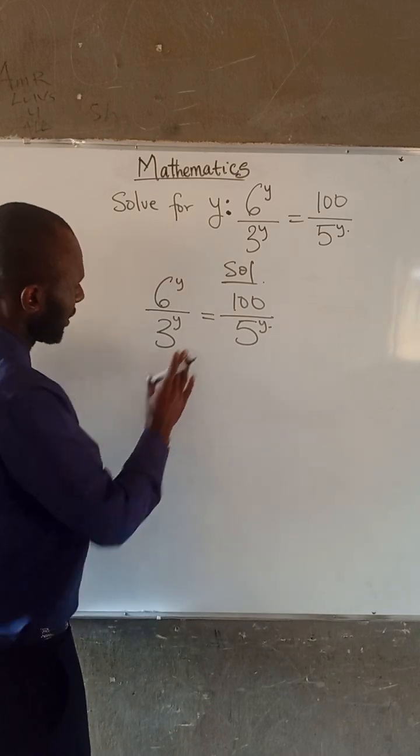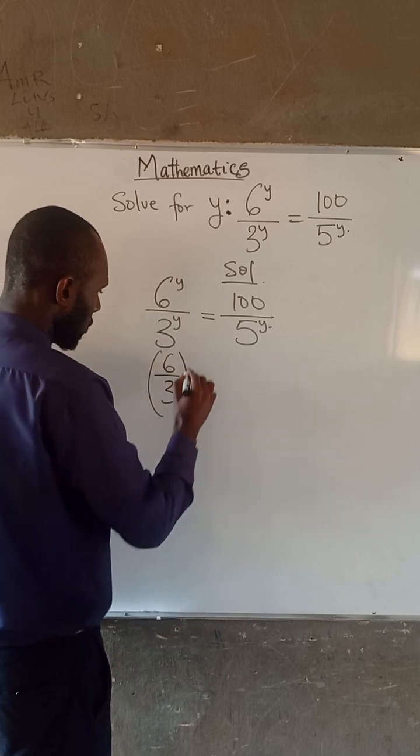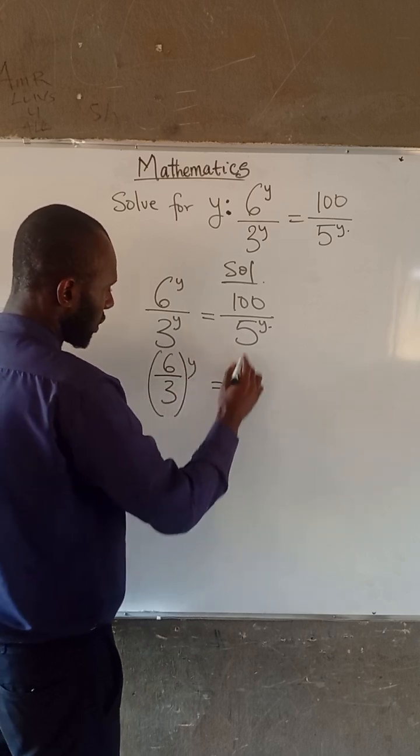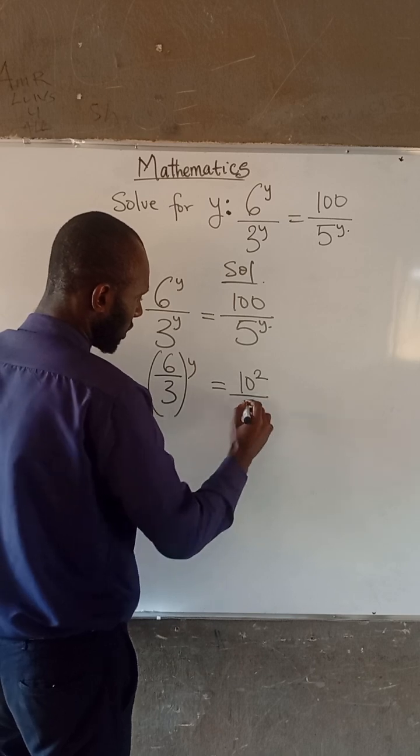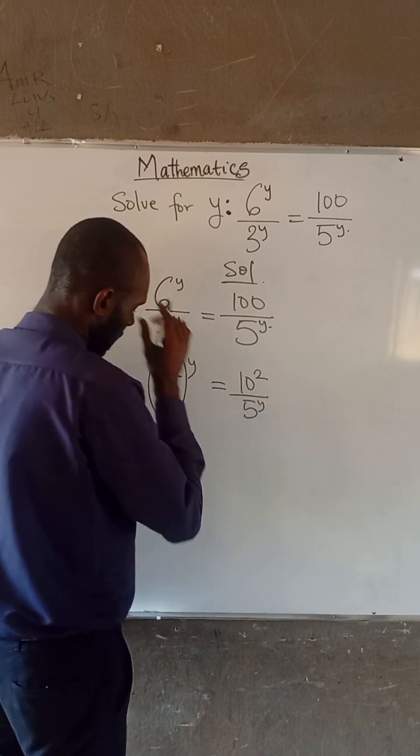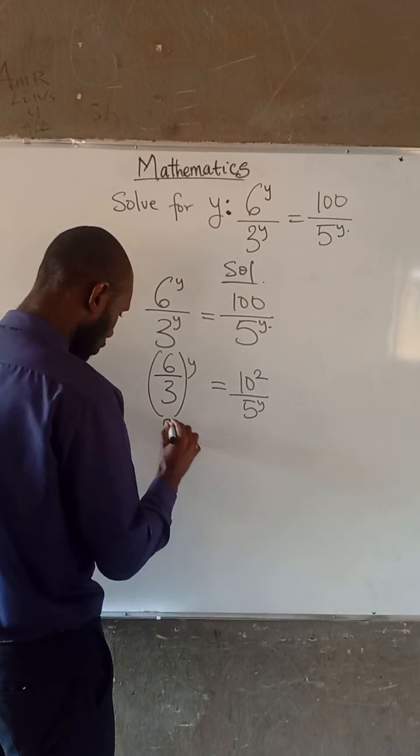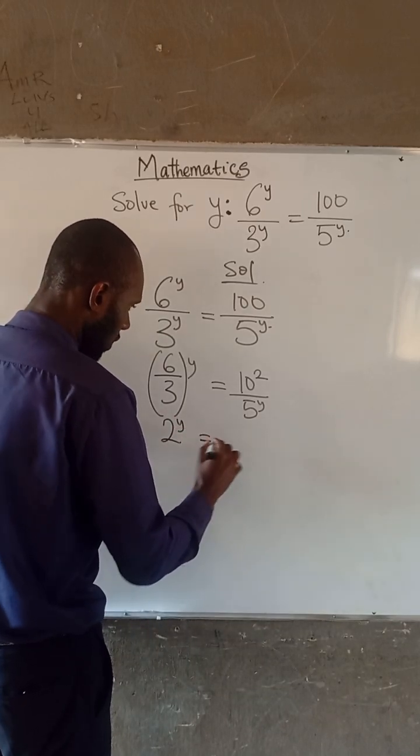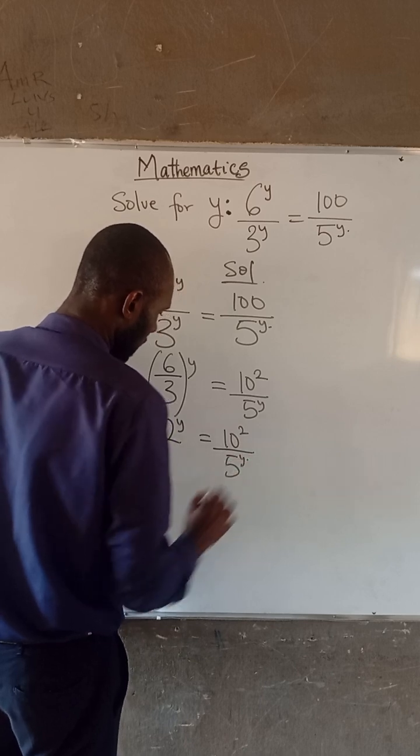Now, the left hand side can be expressed as 6 divided by 3, all to the power of Y, equal to 10 squared divided by 5 to the power of Y. 6 divided by 3 is 2, so we have 2 to the power of Y equal to 10 squared divided by 5 to the power of Y.